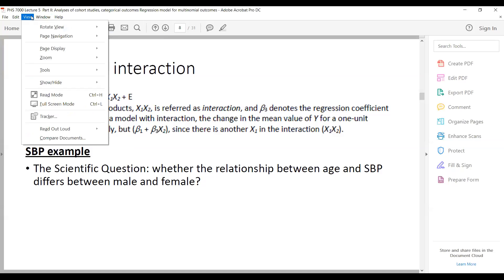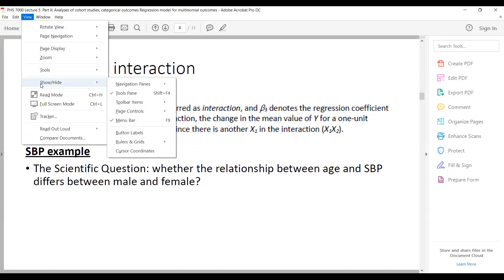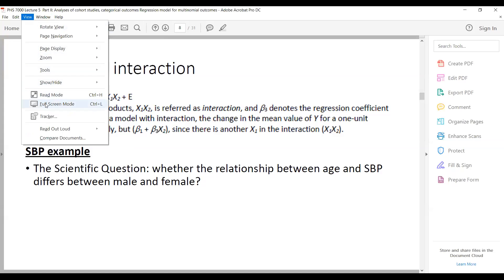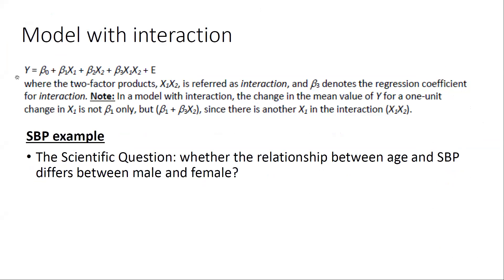Now, let's look at the model with interaction. For a linear regression model, if you only consider the main exposure variable X1 without considering the potential effect modifier X2, the model would be just a simple linear model: Y equal to beta 0 plus beta 1 plus error terms.